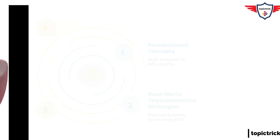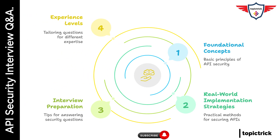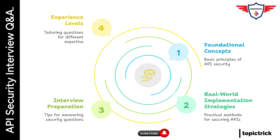We're preparing for an interview, and the panel suddenly throws the phrase, 'Tell us how you'd secure our APIs.' Your mind goes blank. If that sounds familiar, don't worry, you're in the right place. In this video, we're diving into 20 powerful API security interview questions and answers, from foundational concepts to real-world implementation strategies. Whether you're just starting out or have years of experience, these questions could be the edge you need to impress any interviewer. So grab your notes, stay tuned till the end, and let's get into it.